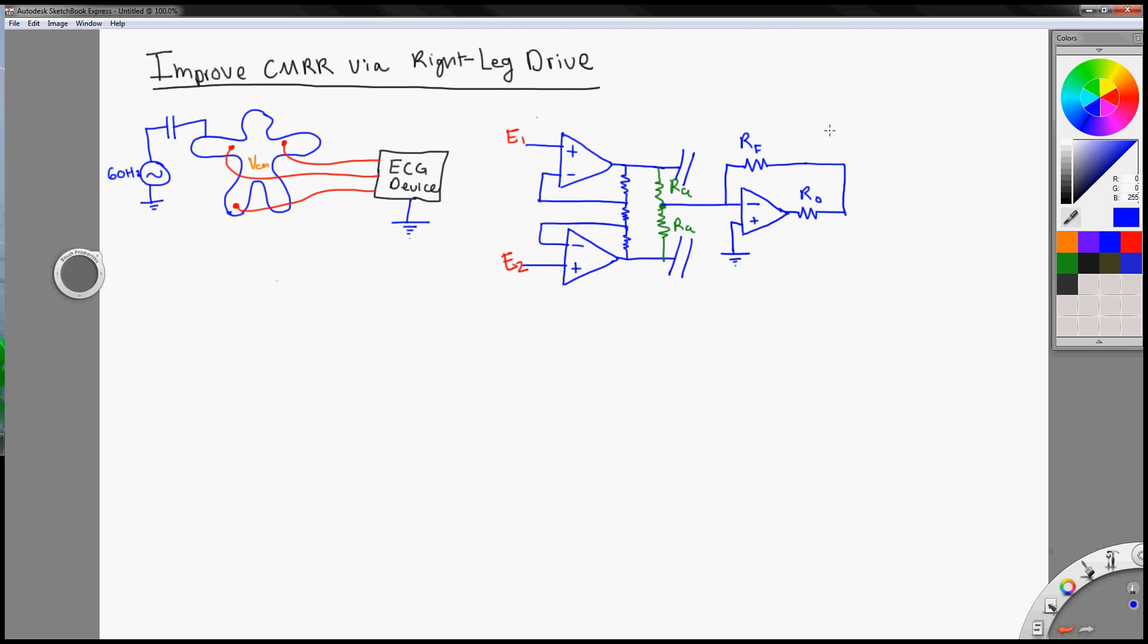So this is the right leg circuit right here. This will be connected to the patient's right leg, and then we can model the resistance called R right leg, and hence that's where the name right leg drive comes from.